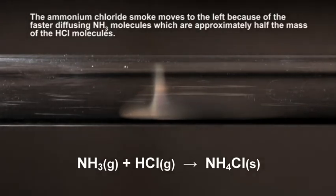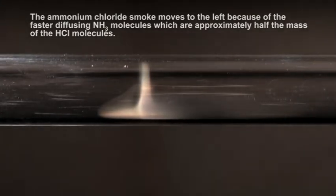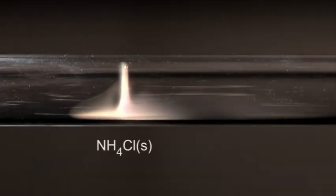not formed in the middle of the tube because ammonia molecules travel faster than hydrogen chloride molecules. The faster moving ammonia pushes the ring of ammonium chloride to the left.